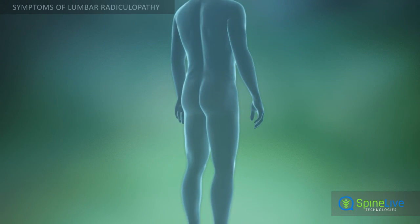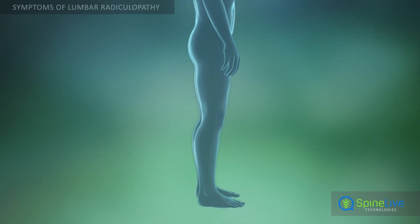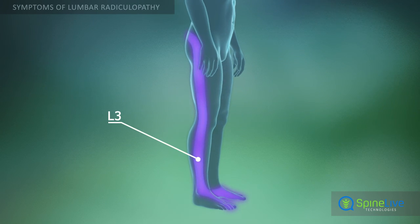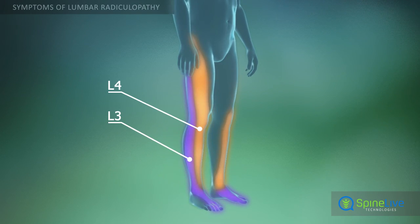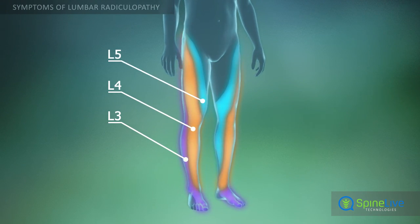In some rare cases, people with lumbar radiculopathy have pain in one part of the leg, with numbness, tingling, or muscle weakness in another part.